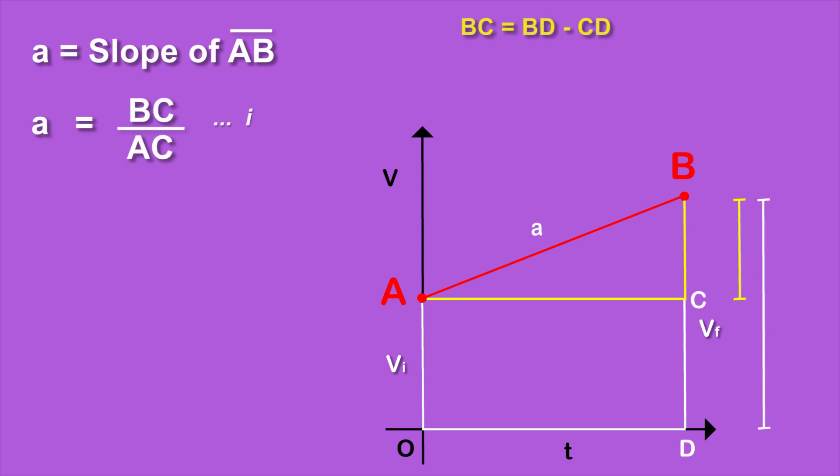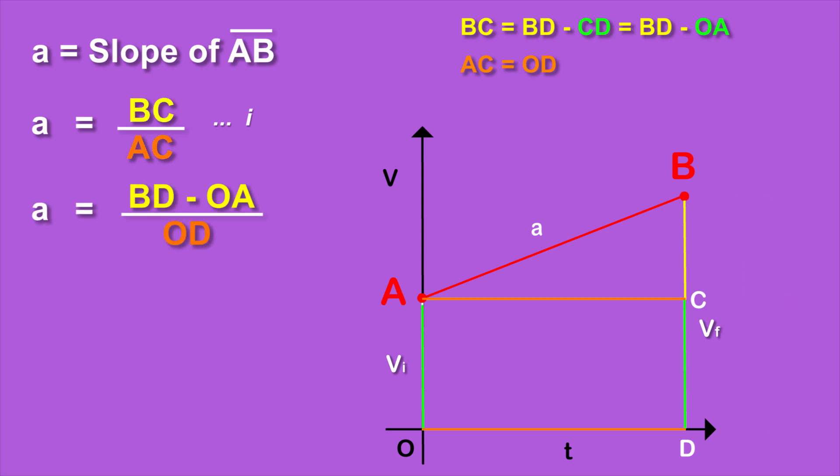Here BC equals BD minus CD. CD equals OA and AC equals OD, as they are opposite sides of a rectangle. Now by putting the values of BC and AC in equation 1, we get a equals BD minus OA over OD.